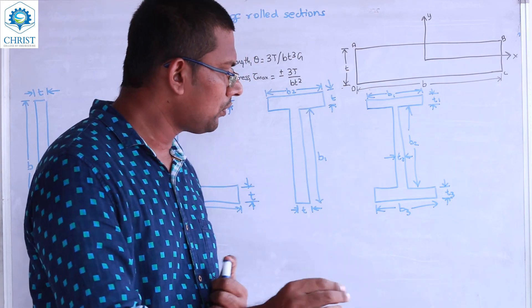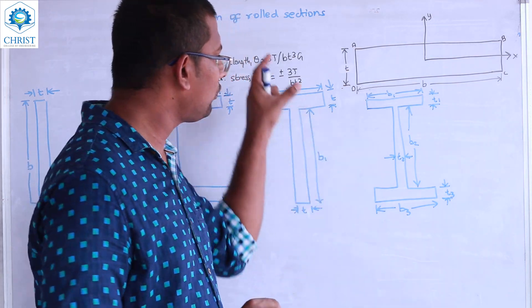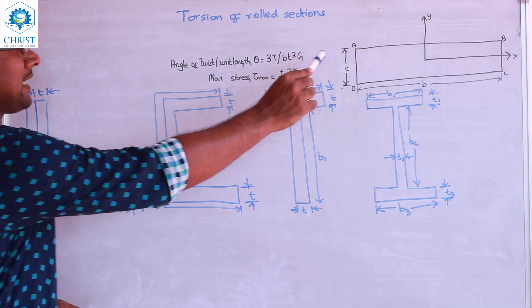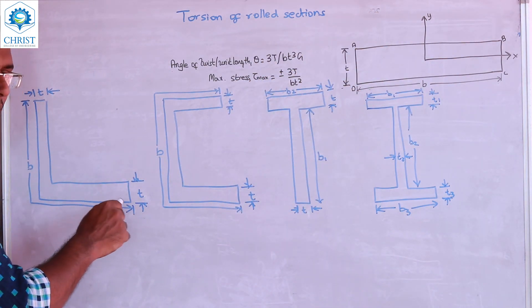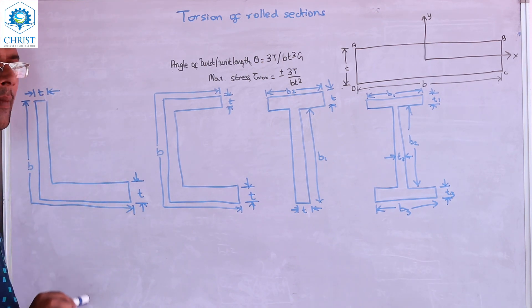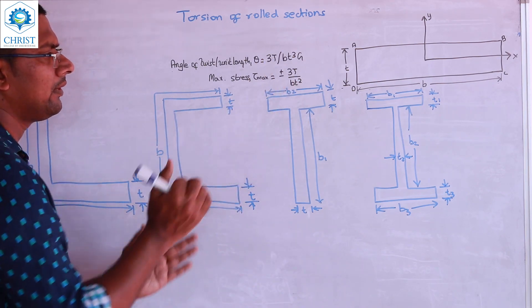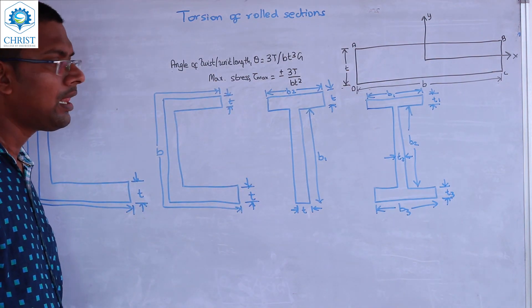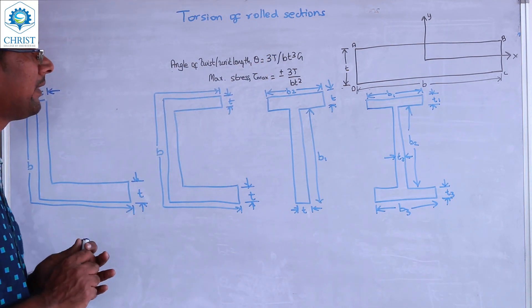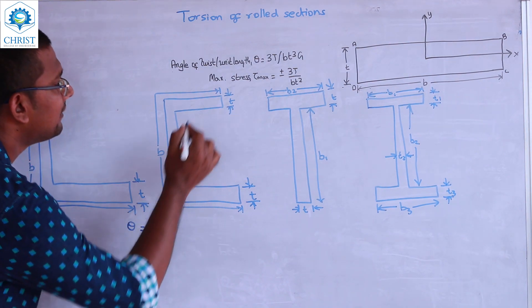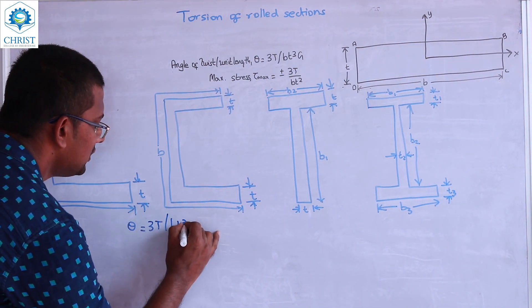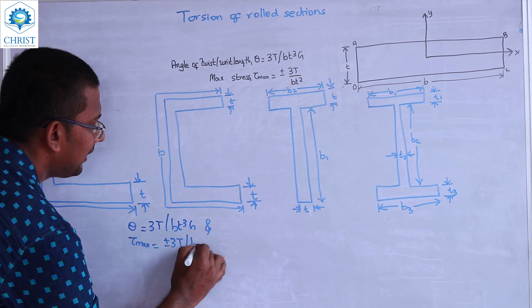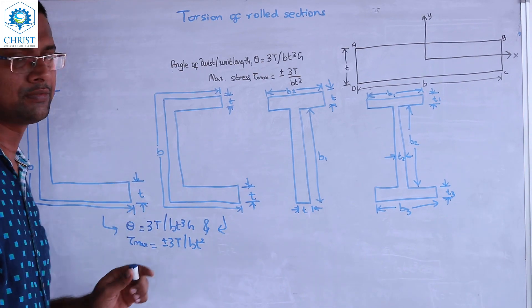For the L section and C section, the total breadth is B and thickness is T. We will use the same two formulas: θ equals 3T divided by (b·T³·G), and τmax equals ±3T divided by (b·T²). These two formulas apply directly to L and C sections.